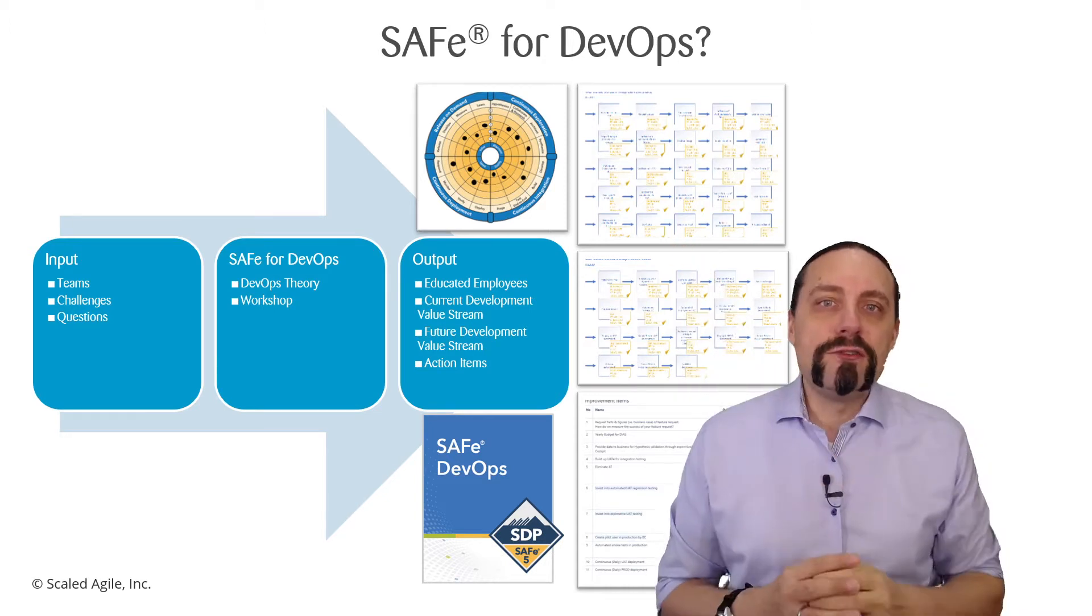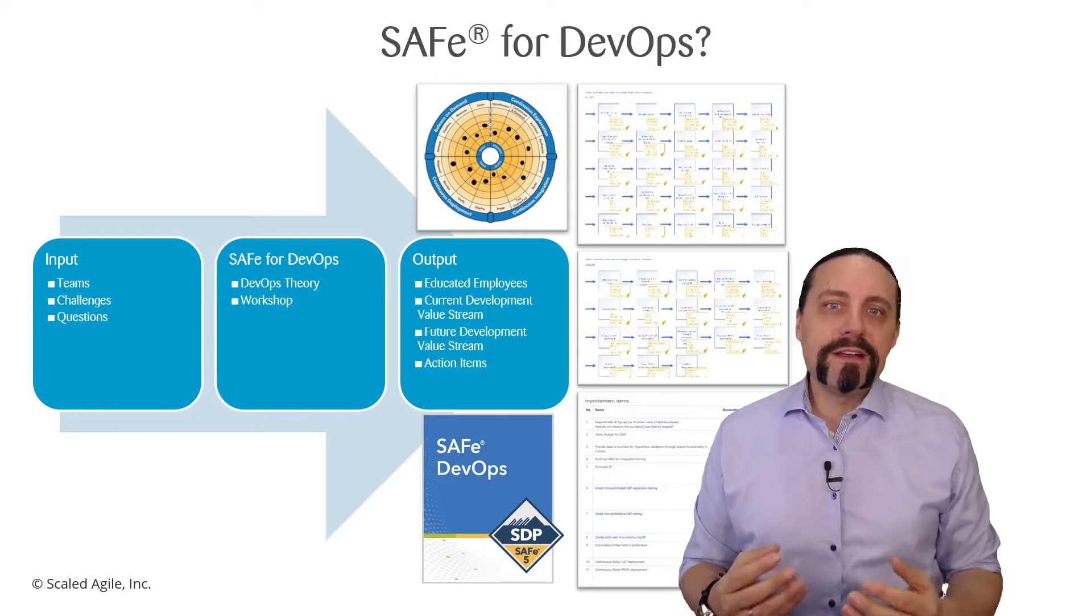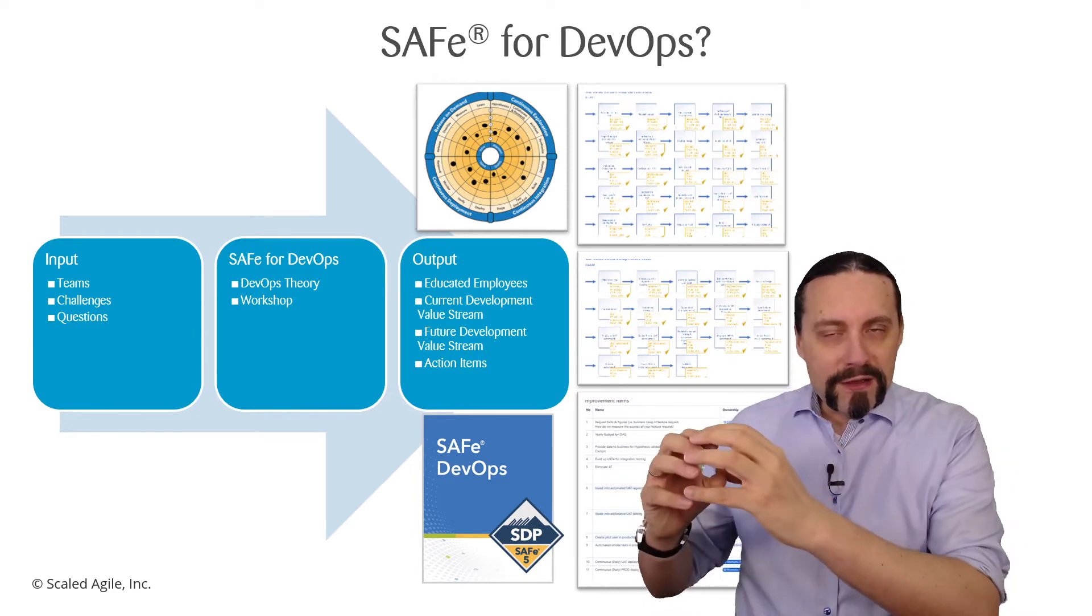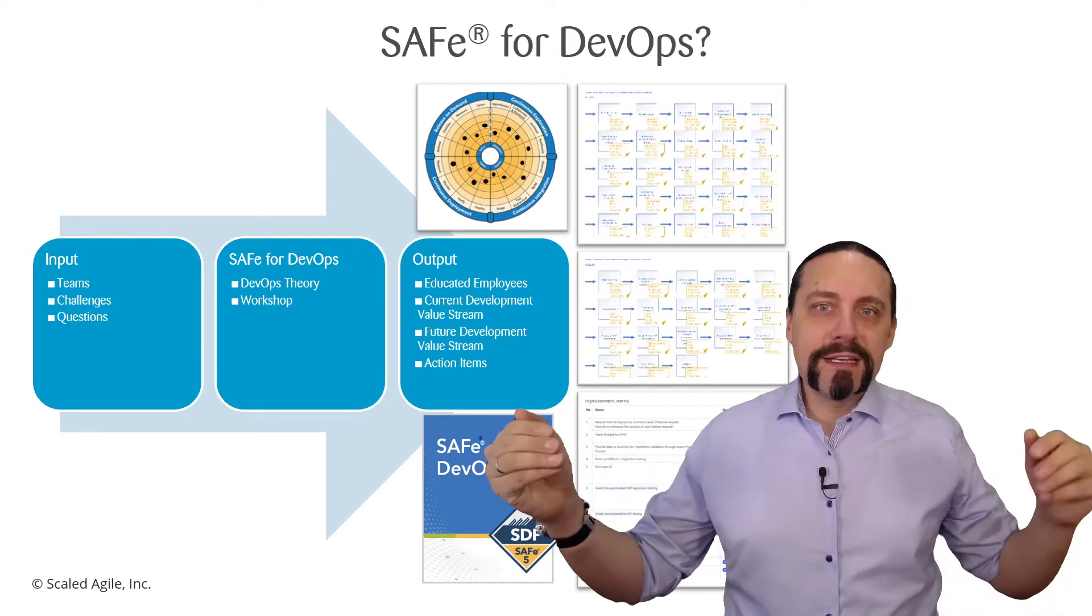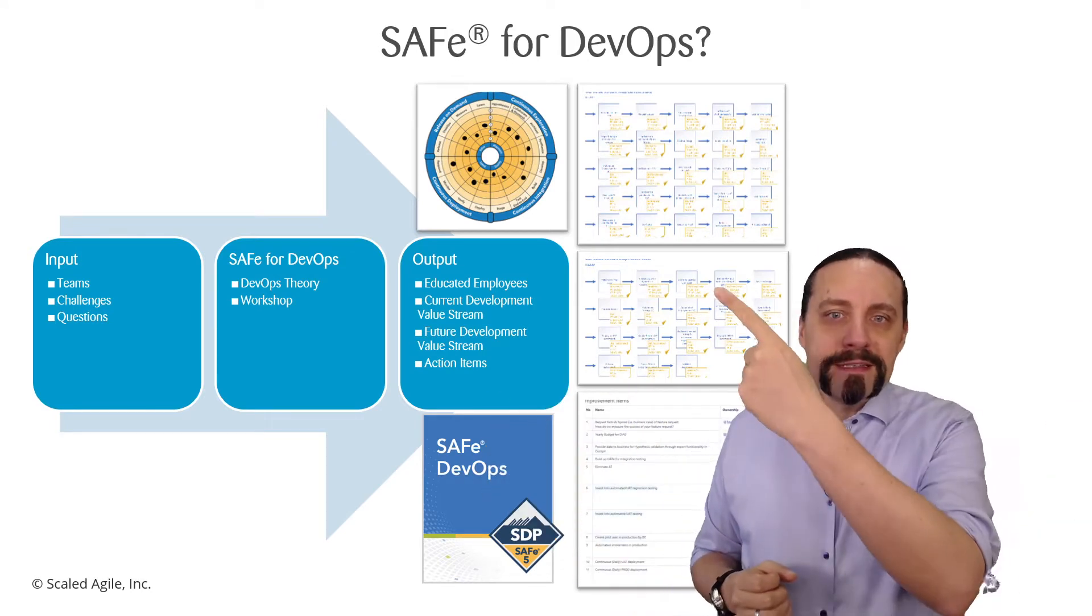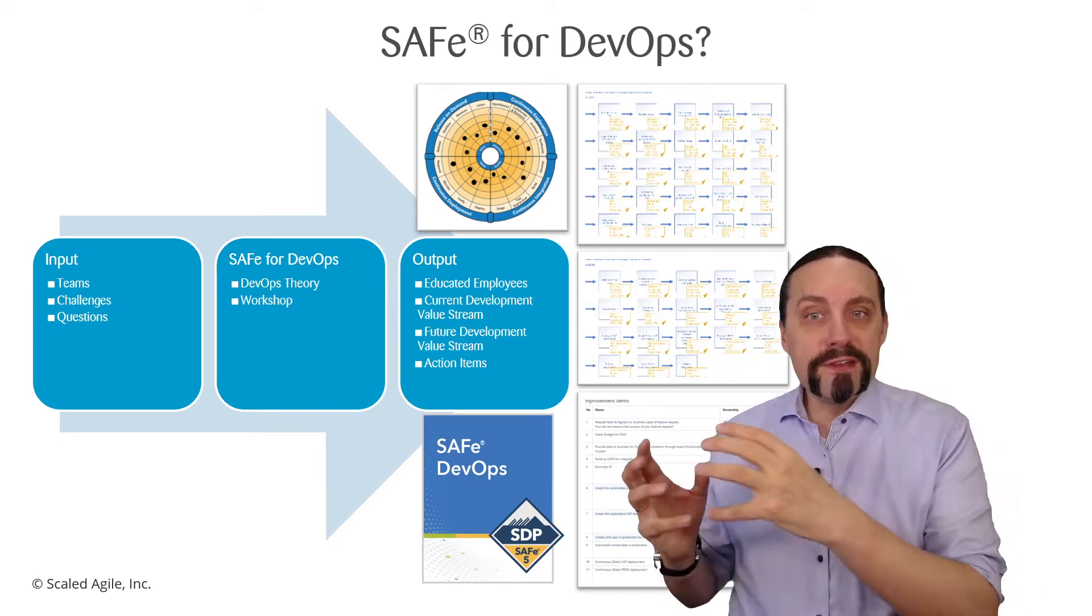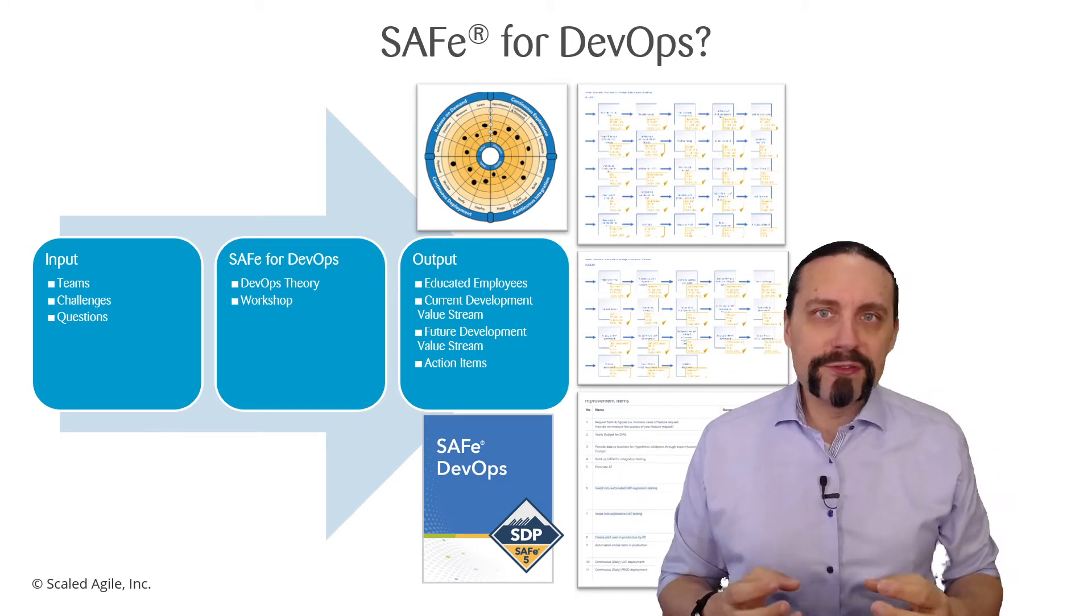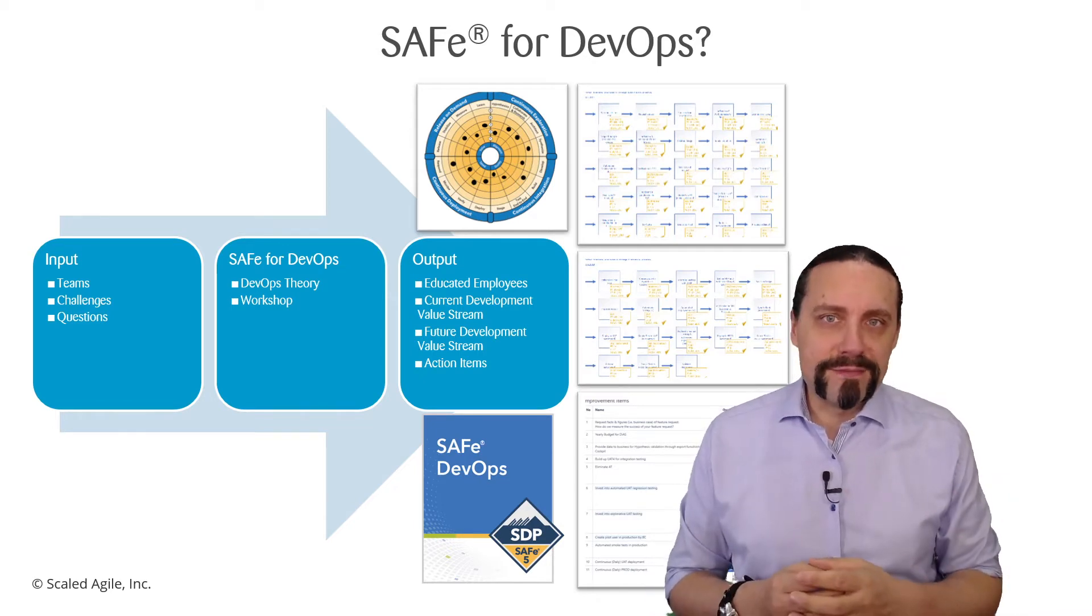Then we are going to do a so-called value stream mapping. There we are going to map all the process steps that are needed to bring an idea into production. This is the current value stream and from that we will derive with the SAFe for DevOps input the future value stream out of it.